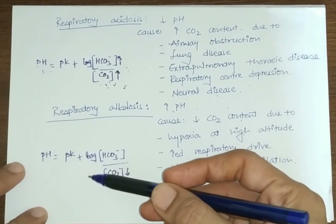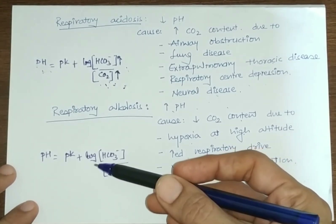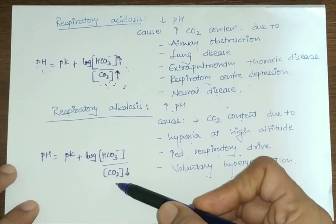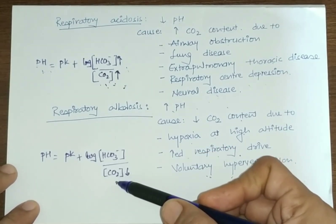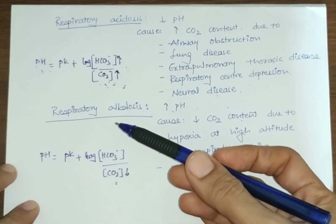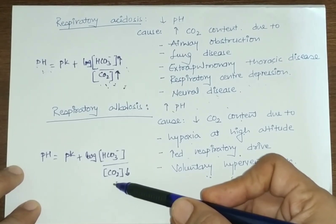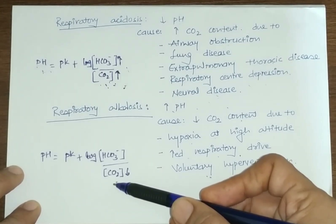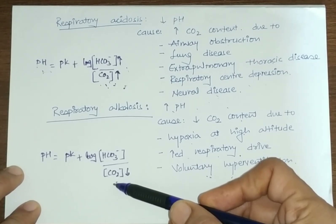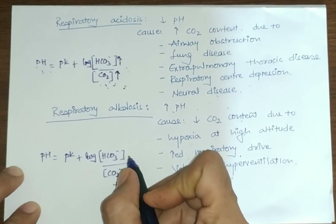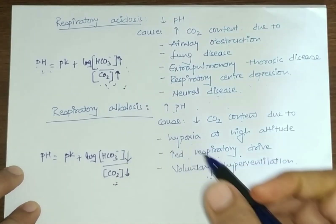In uncompensated respiratory alkalosis, there is only a decrease in CO2 concentration. In compensated respiratory alkalosis, as CO2 decreases, carbonic acid is also reduced, so the kidneys decrease excretion of H+ ions. With decreased H+ secretion, there is also decreased reabsorption of bicarbonate ions, so HCO3⁻ concentration also decreases.